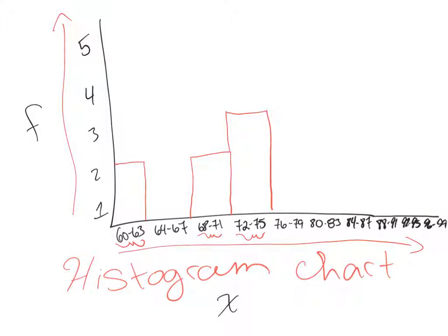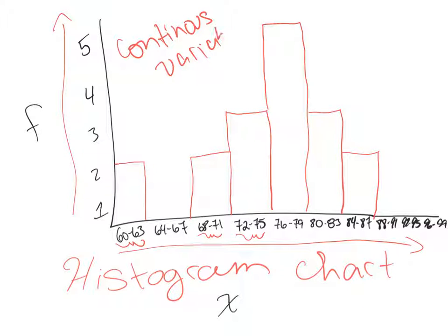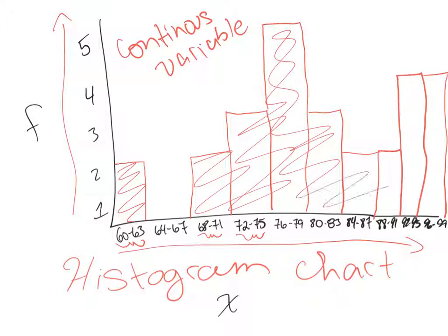And then we had three people that scored 72 to 75, so it would kind of go up like that. And we had from 76 to 79, we had five people all the way up there that scored that amount or that range. And 80 to 83, we had three people, so we bring it back down to this section. And then 84 to 87, we had two people. See how all these lines are touching? That implies continuous variables, in opposition to discrete variables. The 88 to 91, we had two people again. And then 92 to 95, we had four people, so way up here. And then 96 to 99, we had four people again.